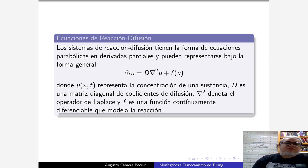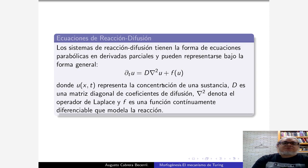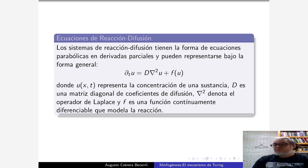Esta es una ecuación de reacción-difusión, son ecuaciones en derivadas parciales. Este término contiene un laplaciano, que es el término difusivo. La D es en general una matriz diagonal con coeficientes de difusión constantes. Y esta es una función continuamente diferenciable que modela la reacción. ¿Cómo cambia la concentración de U respecto del tiempo? Depende de la reacción y de un coeficiente de difusión, que dice que se difunde según la ley de Fick en la dirección contraria del máximo crecimiento, que representa el gradiente de la concentración.